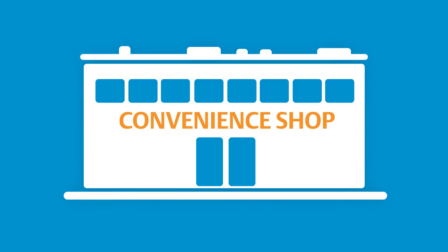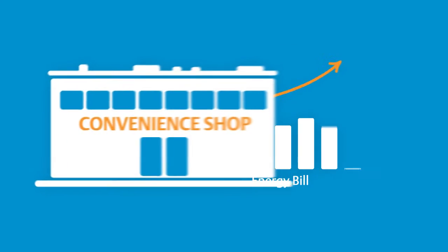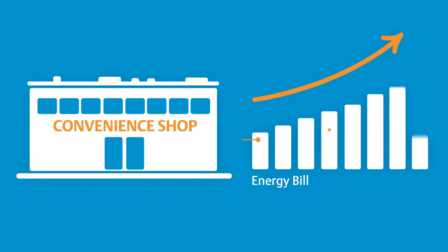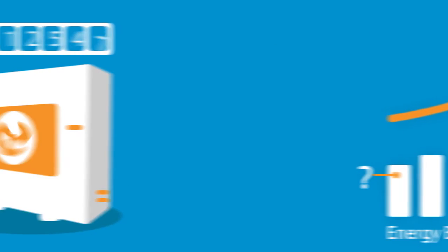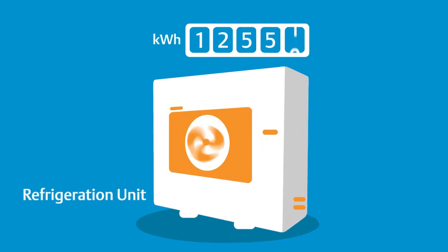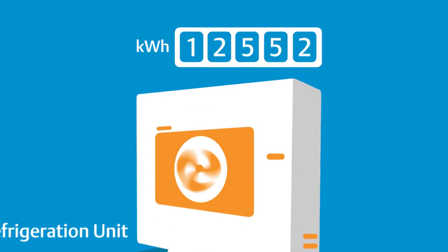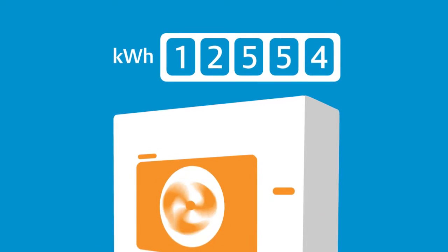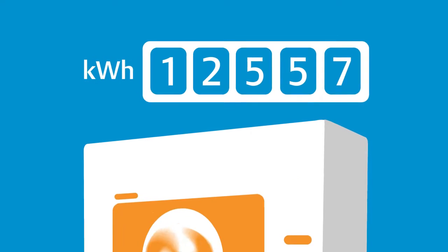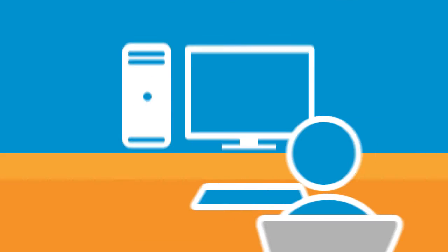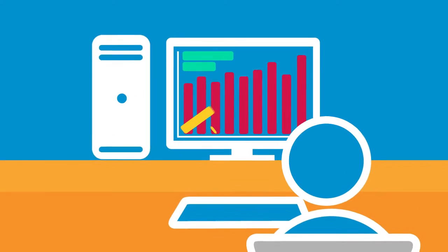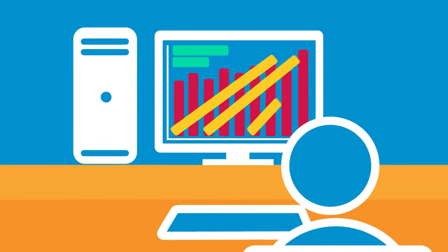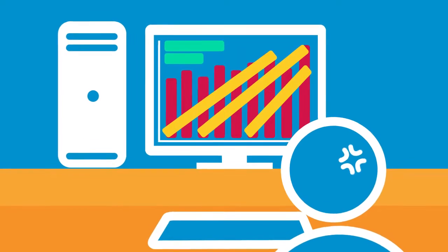The energy bill of my convenience shop increases every year, and I do not know how to reduce it. My refrigeration system is using too much energy, but I cannot monitor the system to influence the energy consumption. As the monitoring of the shop is not dedicated to power consumers, an efficient adjustment of the system components is not possible.